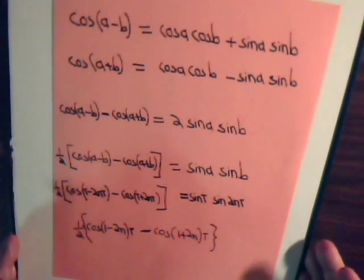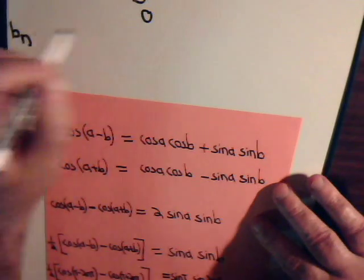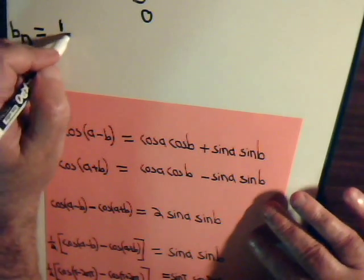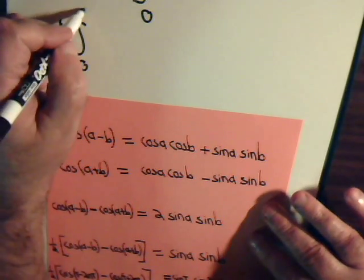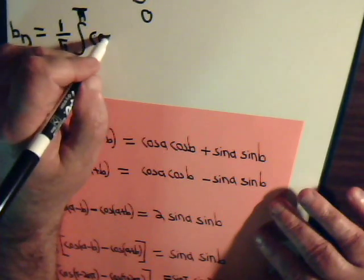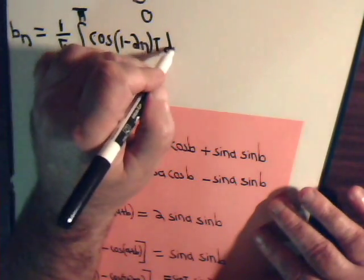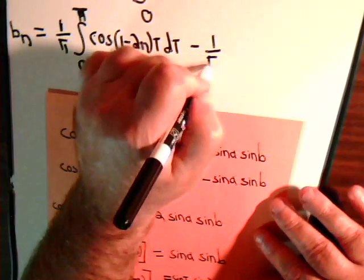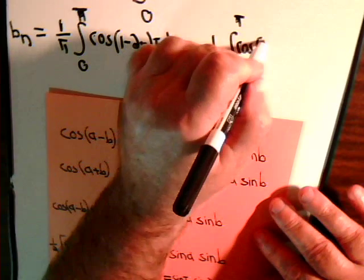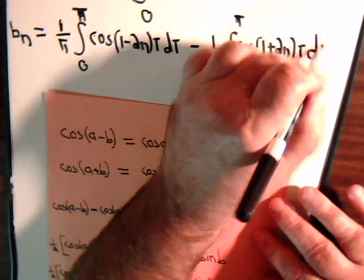But let's just take the time and write this out and see if indeed this is the case. So we have b sub n, that's two over pi and we had a one half outside, so we have just one over pi. Integral from zero to pi of cosine of one minus two n times t dt minus one over pi, integral from zero to pi of cosine of one plus two n times t dt.